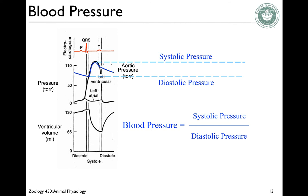Systolic pressure is the peak aortic pressure, and diastolic pressure is the minimum aortic pressure. Diastolic pressure correlates with diastole, and systolic pressure correlates with systole. So blood pressure is expressed as systolic pressure over diastolic pressure.